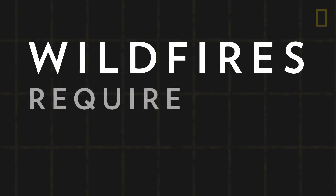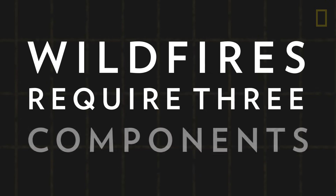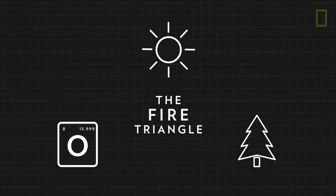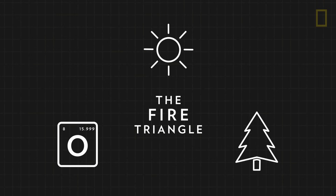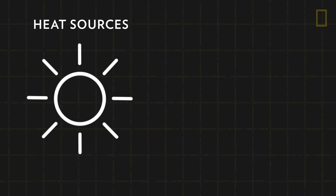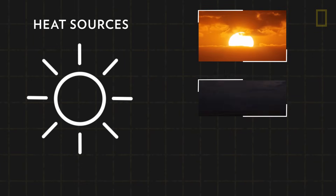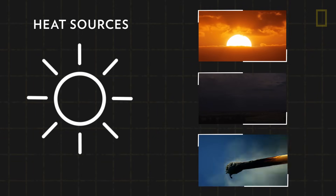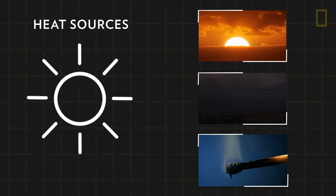Wildfires require three components known as the fire triangle: a heat source, fuel, and oxygen. Heat sources such as the sun, a hot bolt of lightning, or a smoldering match can supply enough heat to spark a fire.